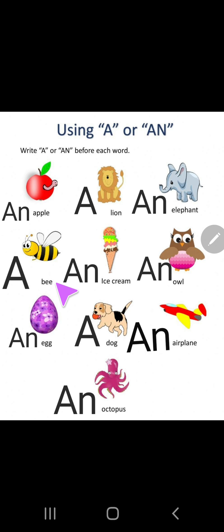Bee. B-E-E-B. So we use a because B is the consonant. Ice cream. So we use an because I is the vowel. Owl. So owl is O. O is the vowel. So we use an.